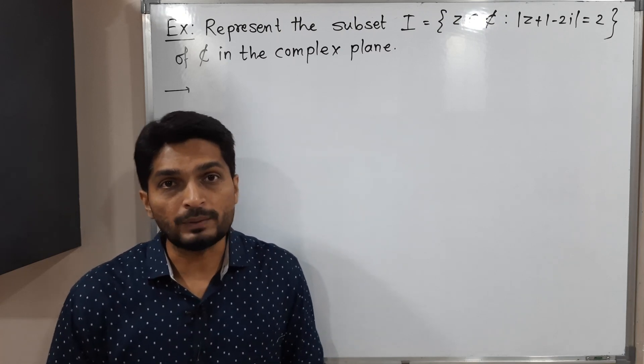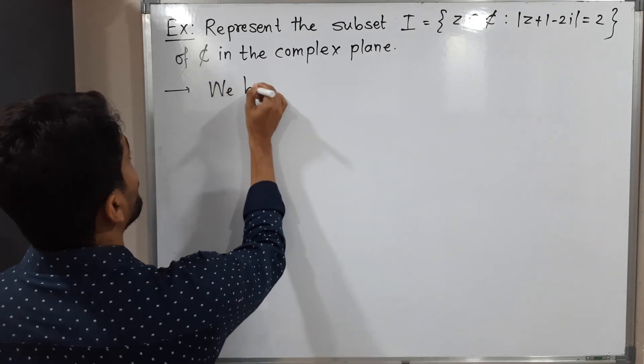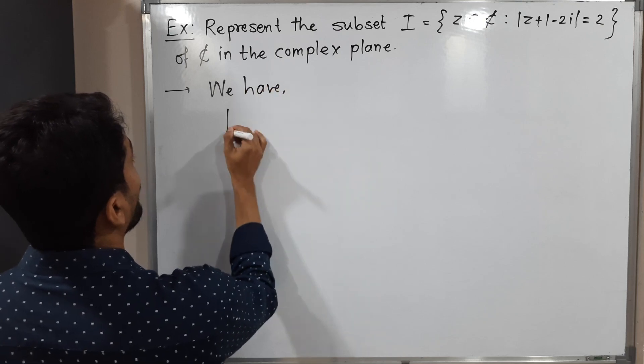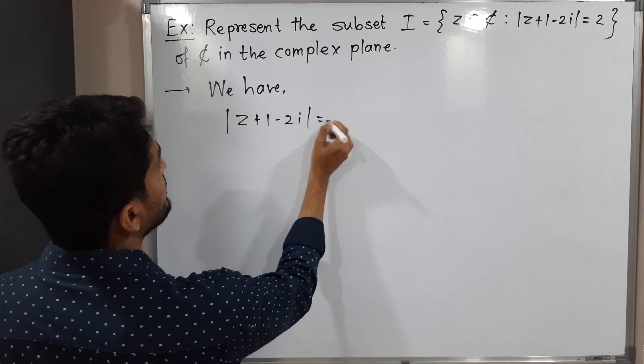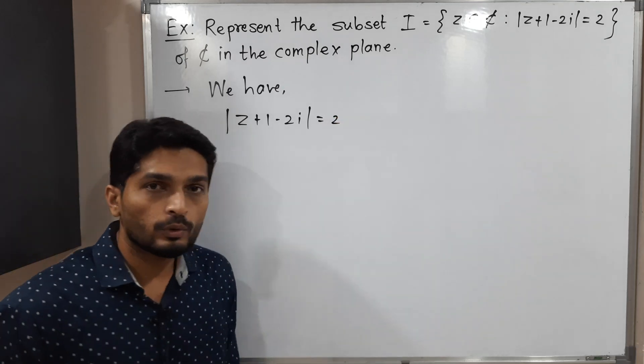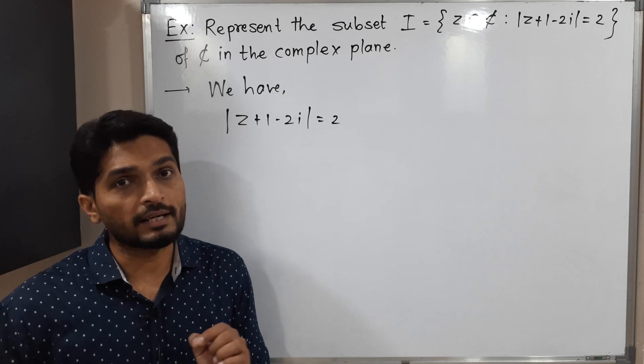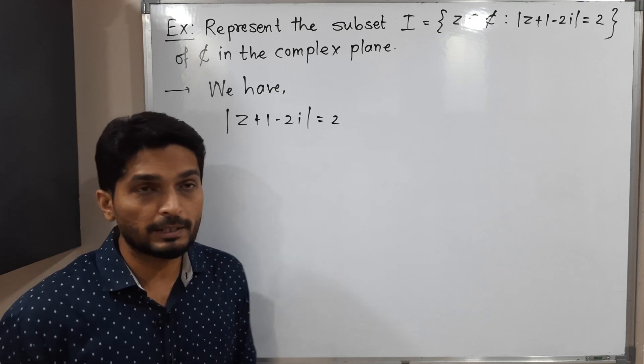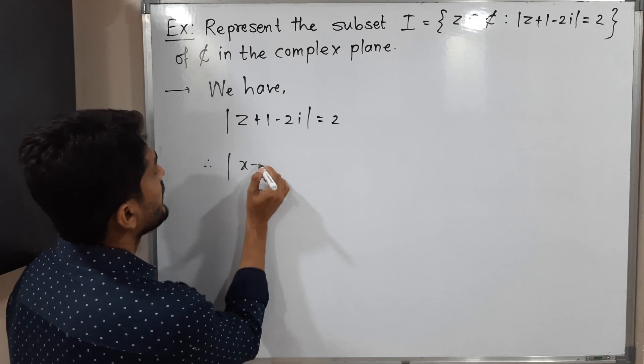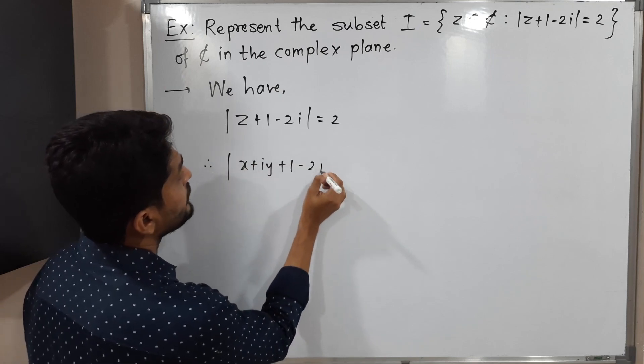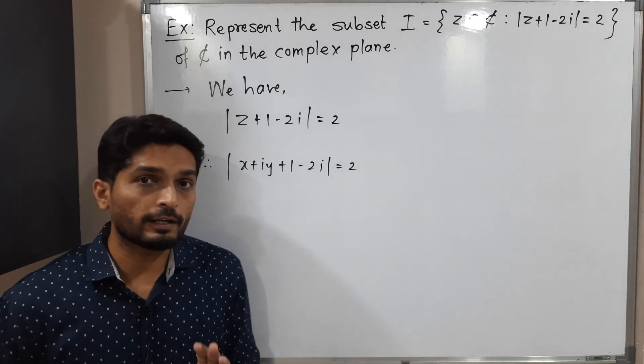We will start our solution with that condition. We have mod(z + 1 - 2i) = 2. In most cases, what we do is replace z by its partition form x + iy. So therefore mod(x + iy + 1 - 2i) = 2. Here we have to find the value of mod, but before that we will collect real part and imaginary part.